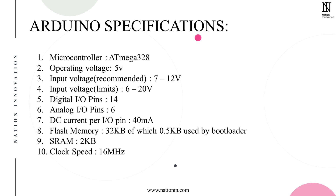The flash memory is 32 kilobytes, of which 0.5 kilobytes is used by the bootloader. The bootloader is software preloaded on the Arduino so that we can upload our code from a laptop to the board. You might wonder why only 32KB — in our modern world, phones come with 128GB or even 1TB of storage. But trust me, 32KB is enough for a microcontroller. You can write thousands of lines of code and still not fill 50% of the memory.